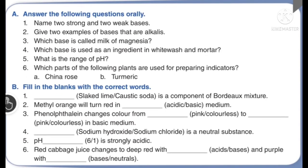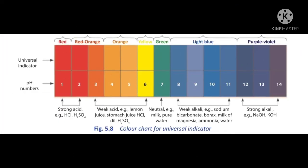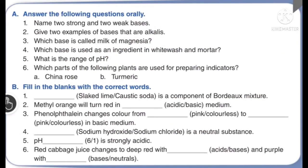We have learned about universal indicators. The range of pH is 1 to 14. A universal indicator is a mixture of indicators so chosen that it gives a different color for different pH values. Indicators can also be prepared from brightly colored parts of plants such as flowers, roots, stems, and leaves — these are natural indicators.